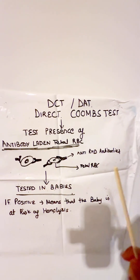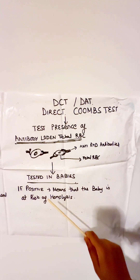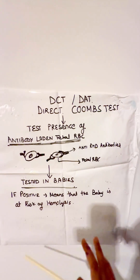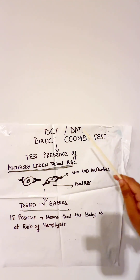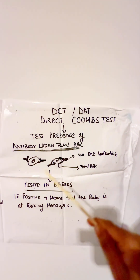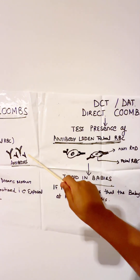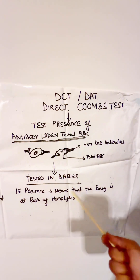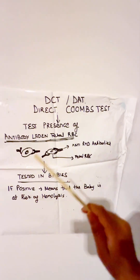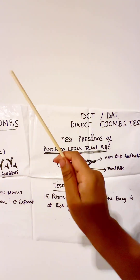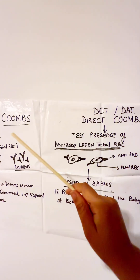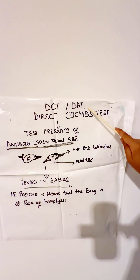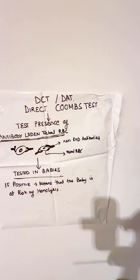When we check DCT, we also look at the titer, which can be 1+, 2+, 3+, or 4+. A mild DAT positive can be seen in babies whose mother received anti-D injections during pregnancy, because that is also an antibody. So we have to be cautious when interpreting the DAT result. However, a titer of 3+ or 4+ is always significant and clinically concerning.